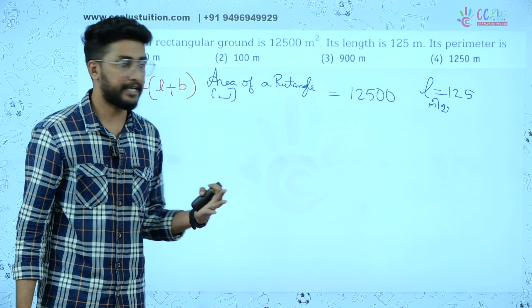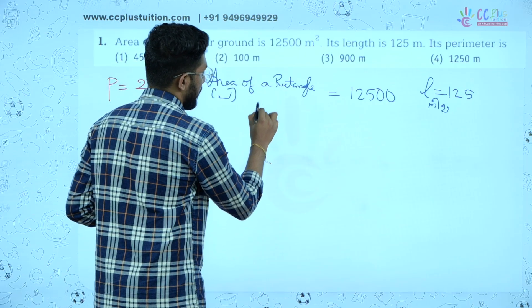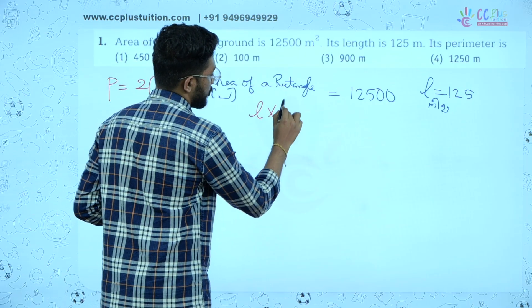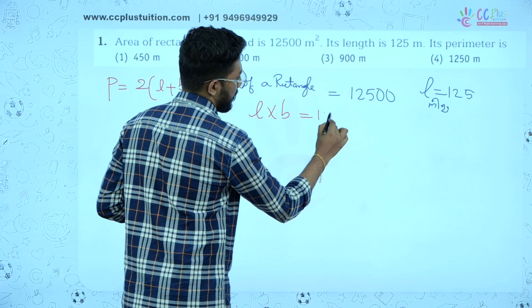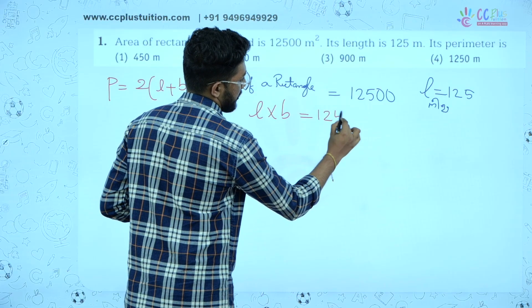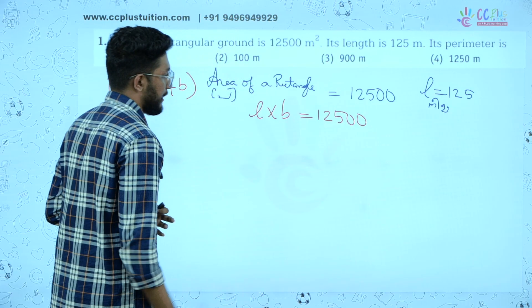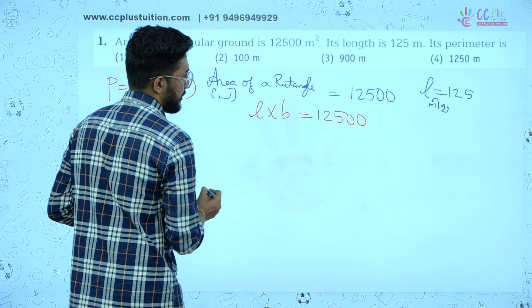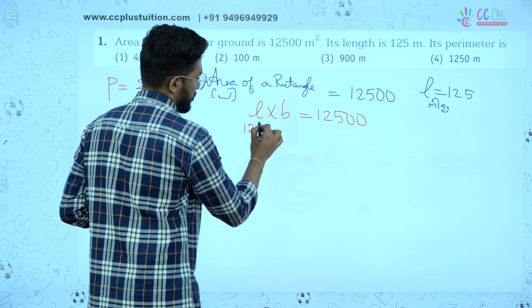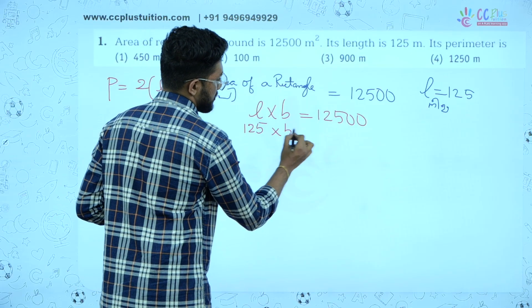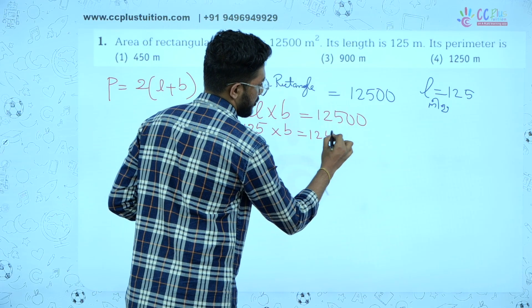B is equal to B. The area of rectangle equation is length into breadth, which equals 12,500. Length is 125, so 125 × B = 12,500.